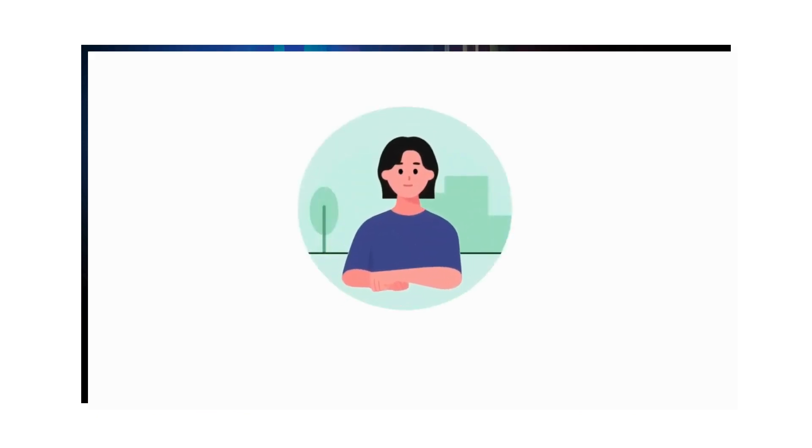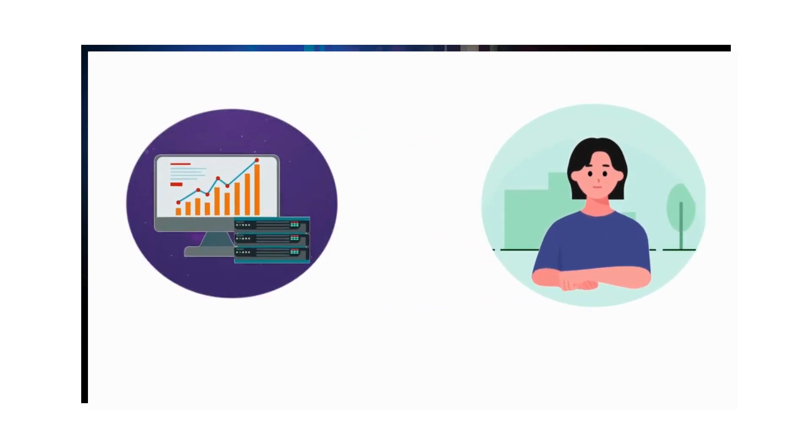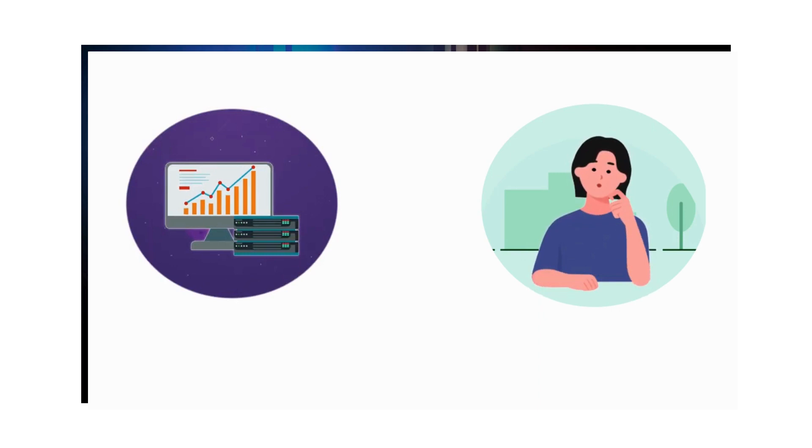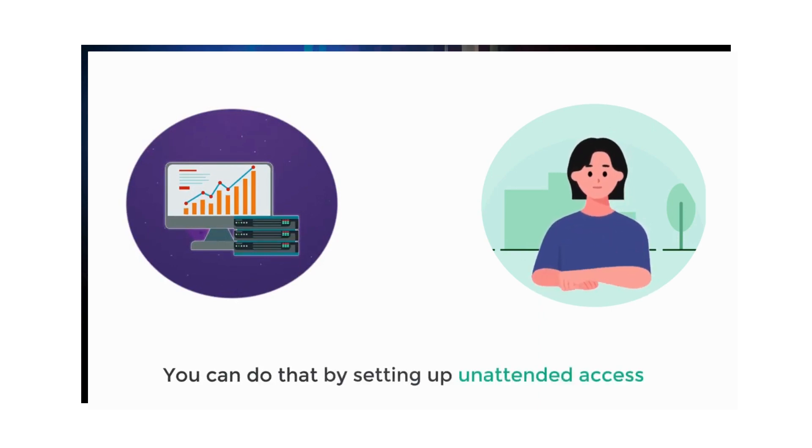Now you know how to connect to your client's PC and transfer files to it. Let's say you're in another place far from your computer and no one is near your computer to access it for you. How will you access your computer? You can do that by setting up unattended access. To connect to your client's PC normally, you need their partner ID and password, which means your client has to share these details with you. But by setting up unattended access, you don't need their partner ID or password to connect. Instead, you can access the computer just by selecting it on TeamViewer, and connect to your own computer anytime and from anywhere, even if there's no one near your PC.